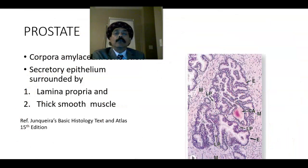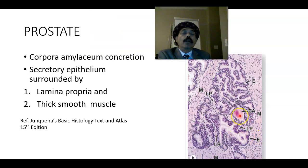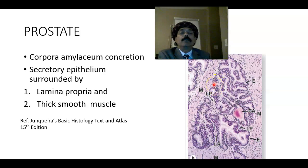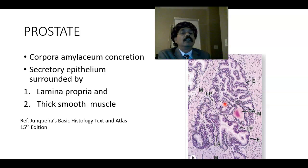Here we are looking at the corpora amylacea, or prostatic concretion. These are the tubular glands, and they are lined by columnar epithelium or pseudostratified columnar epithelium — in some places it may be simple columnar epithelium. The epithelium is supported by the lamina propria, which is loose connective tissue. These columnar cells form the parenchyma of the gland, and the gland contains the concretion called corpora amylacea.